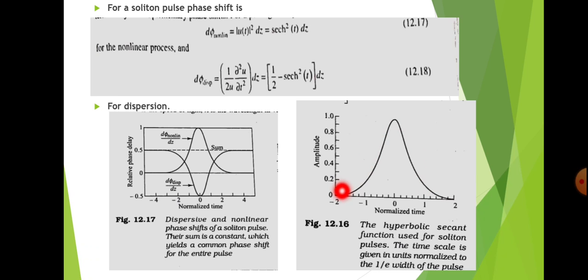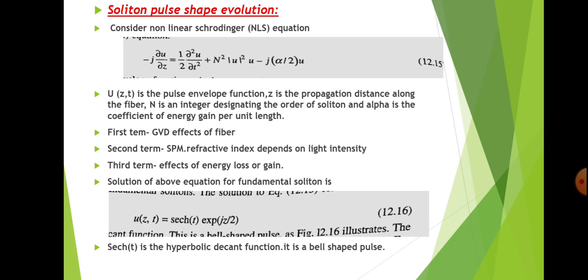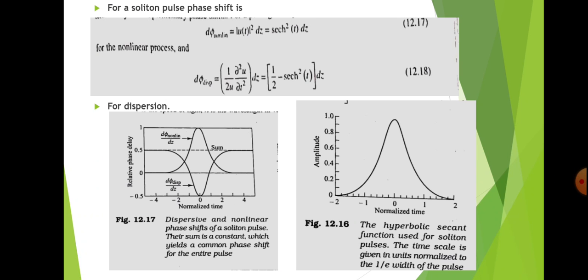The soliton equation is u(z,t) = sech(t) · exp(jz/2). In this case, the exponential function has no influence on the shape of the pulse — since it is a function of z only, it has no effect on the temporal pulse shape. This means the soliton is independent of z, so the soliton is non-dispersive in the time domain.